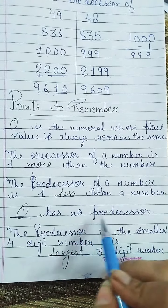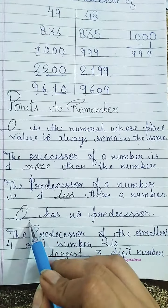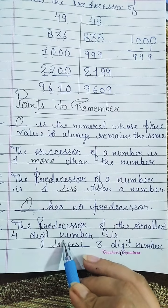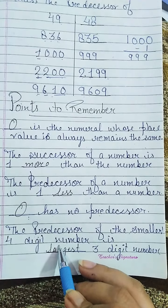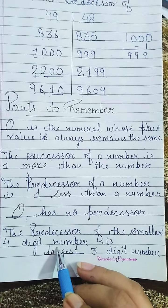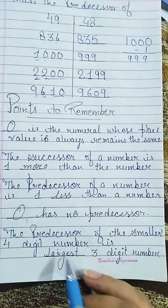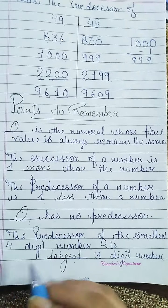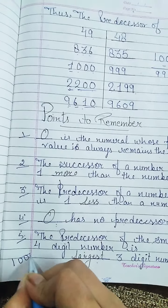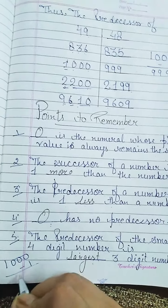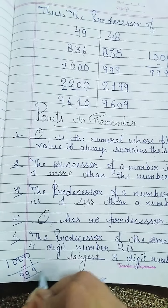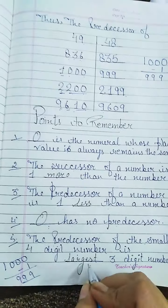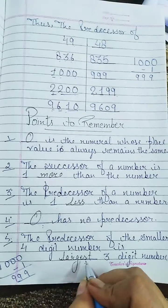Point 4: Zero has no predecessor — nothing comes before zero. The predecessor of zero is nothing. Point 5: The predecessor of the smallest 4-digit number is the largest 3-digit number. The smallest 4-digit number is 1,000. When we subtract 1 from 1,000, we get 999 — the largest 3-digit number.